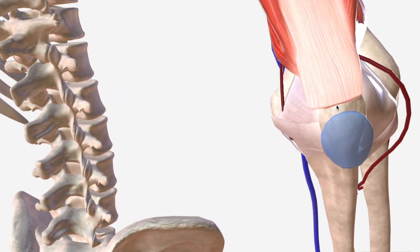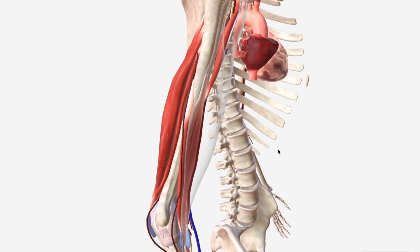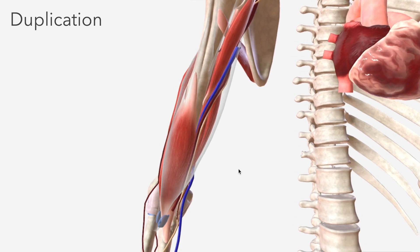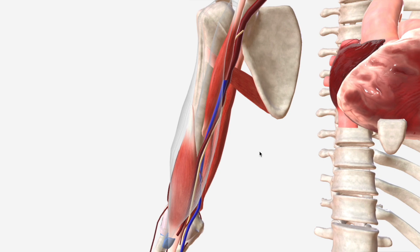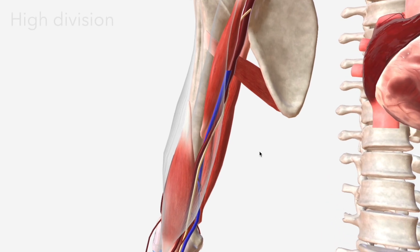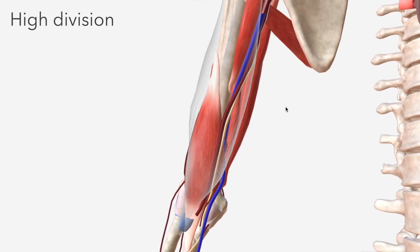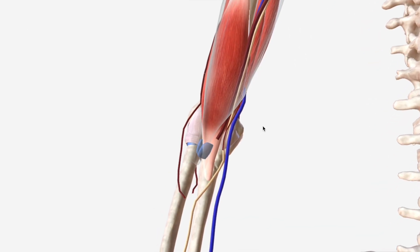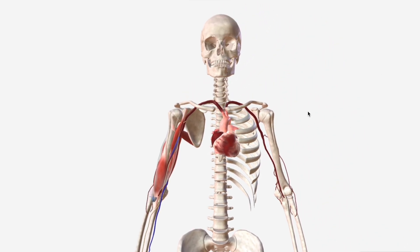Before we wrap up, let's go over some interesting anatomical variants for the brachial artery. It is in fact duplicated for all, or maybe just part of its course, in about a fifth of the population. And in a smaller proportion, you'll see what we call a high division of the brachial artery, where it terminates to form the ulnar and radial arteries in the upper arm rather than the forearm. Thank you very much for watching, and we'll see you in the next video.